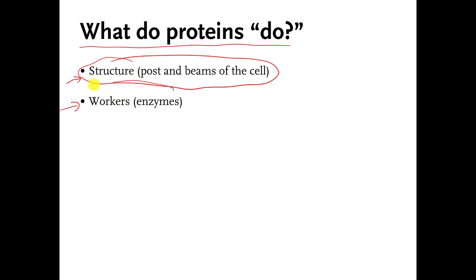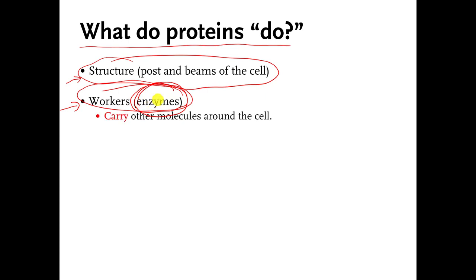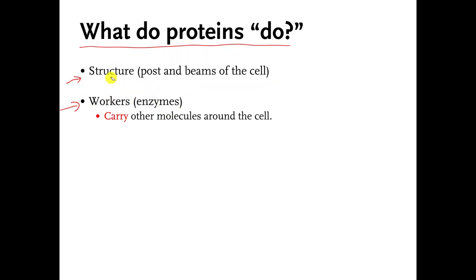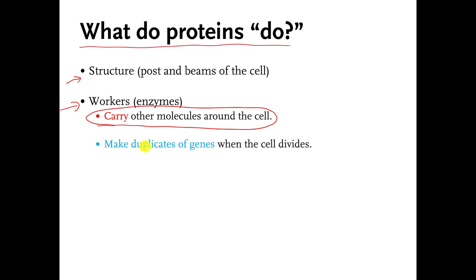There are other jobs that speed up chemical reactions. Molecules in living cells that speed up chemical reactions have a special name — they are called enzymes. We will talk about that in a later video. There are protein molecules that carry other molecules around in the cell — that might be the job of a protein molecule, to pick up another molecule and take it somewhere. There are also protein molecules involved in copying your genes; whenever your cells divide, each new cell needs a copy of your genetic material, and there are protein molecules whose job is to help make those copies.